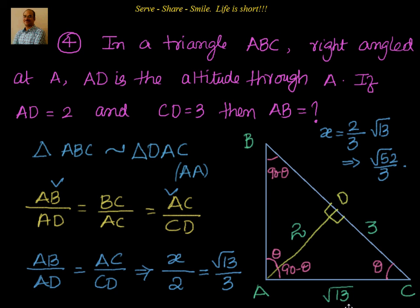After that, we used the similar triangles: triangle ABC and triangle ADC or DAC. We wrote that in similar triangles, corresponding sides are in proportion. We leveraged the existing values given to us and found AB equals 2 by 3 root 13, or root of 52 divided by 3.